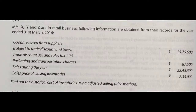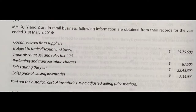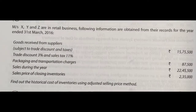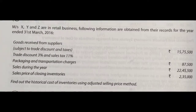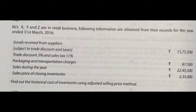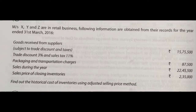The sales value is Rs. 15,75,500. Trade discount of 3% must be deducted — we have to find out the trade discount amount on Rs. 15,75,500. Sales tax (GST) at 11% must be added. Packing and transport charges of Rs. 87,500 must also be added. Sales during the year are Rs. 22,45,500 and the sales price of closing inventory is Rs. 2,35,000. We need to find out the historical cost of inventories using the Adjusted Selling Price Method.